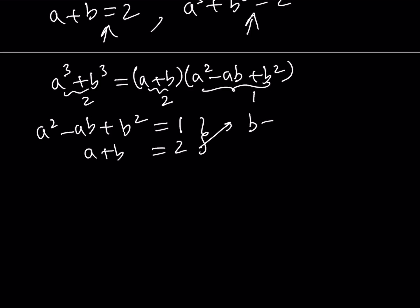One method is you can just go ahead and substitute. From here you can isolate B. B can be written as 2 minus A. If I plug it into the second equation, I get A² minus A times 2 minus A plus (2 minus A)² equals 1.